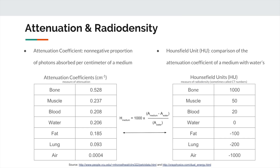Due to the higher attenuation of bone tissues, they appear bright in the radiographs. In contrast, lungs, which consist mostly of air, appear dark since air has very low attenuation. To create the X-rays, CT scans, which are stored in Hounsfield units, are converted to attenuation coefficients using this formula.